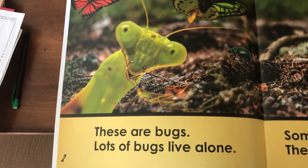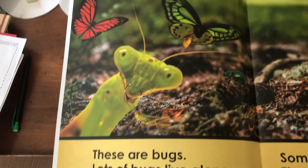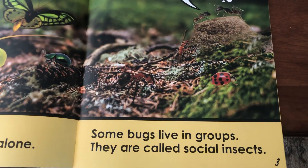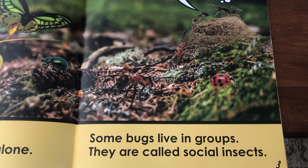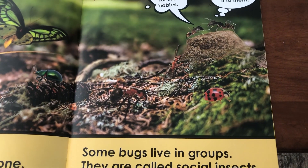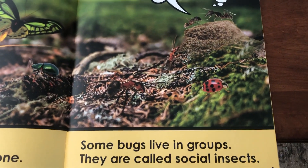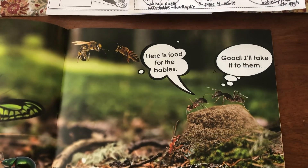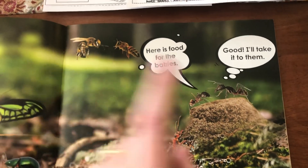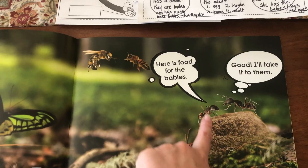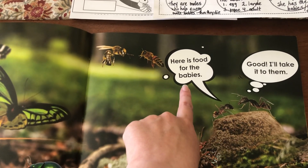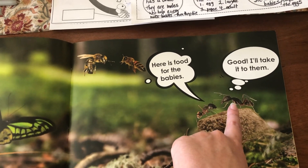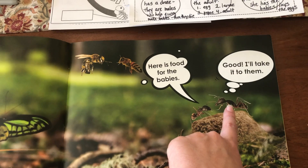These are bugs. Lots of bugs live alone, but some bugs live in groups. They are called social insects. So there's your first fact: social insects live in groups. The ant is thinking — let's read the speech bubble first: "Here is food for the babies." And he's thinking in his head, "Good, I'll take it to them."